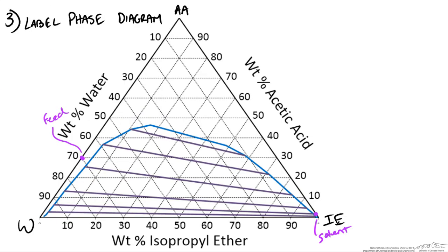We know our raffinate must be 5 weight percent acetic acid, so it has to be somewhere in the middle here. We know our raffinate is going to be predominantly water as we start extracting the acetic acid out. The raffinate falls on the same side as our feed, whereas the extract is mainly going to be acetic acid extracted into the isopropyl ether, so it will be on the same side as our solvent.